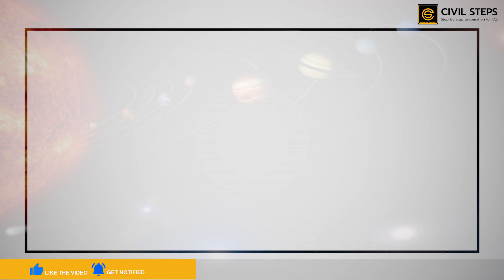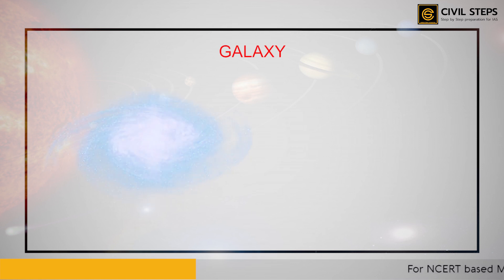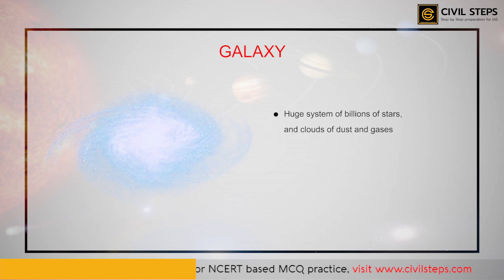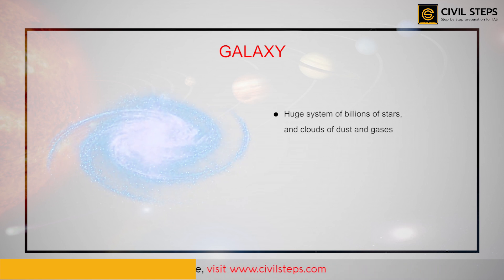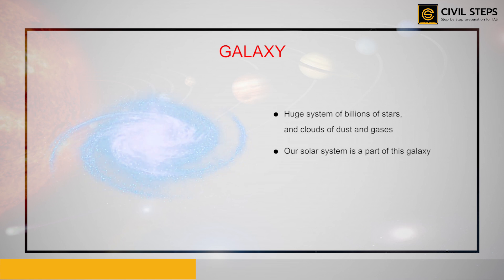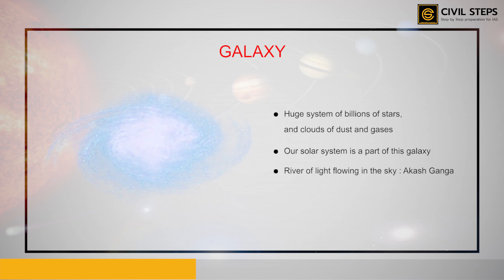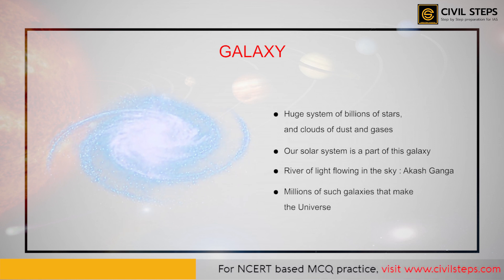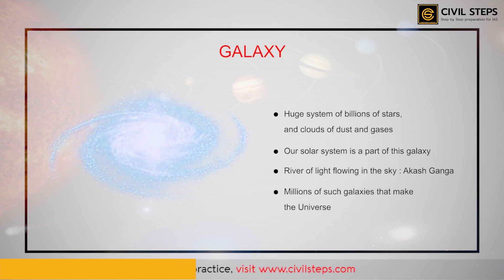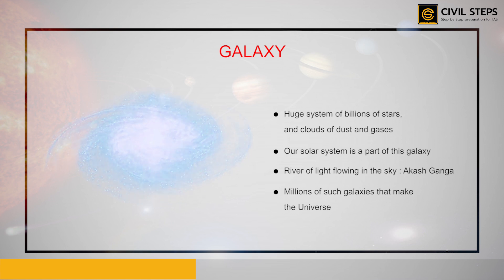A galaxy is a huge system of billions of stars and clouds of dust and gases. Our solar system is also a part of this galaxy. In ancient India, it was imagined to be a river of light flowing in the sky, and thus it was named Akash Ganga. There are millions of such galaxies that make the entire universe. These were the concepts we discussed in this chapter.